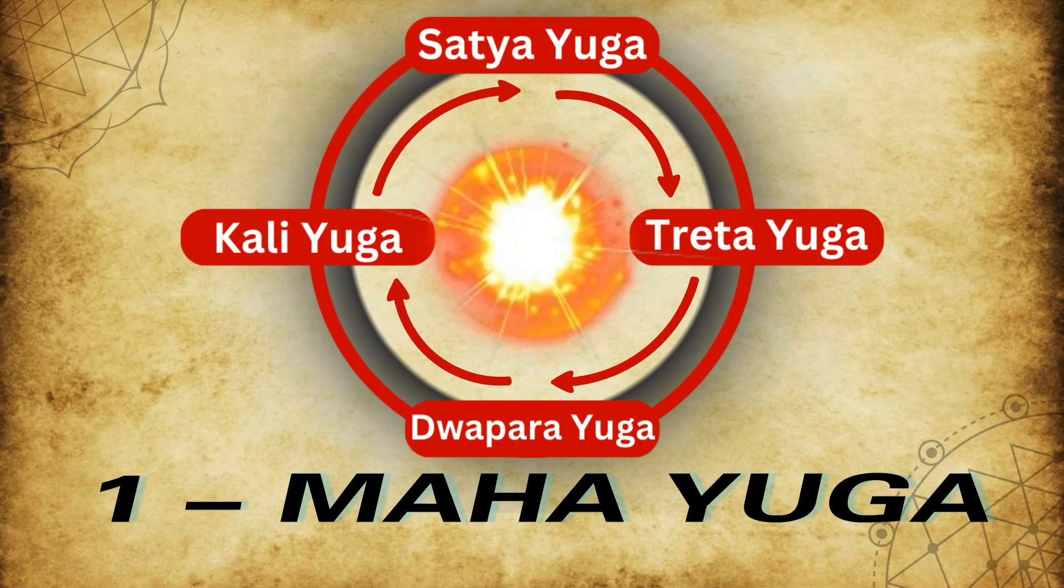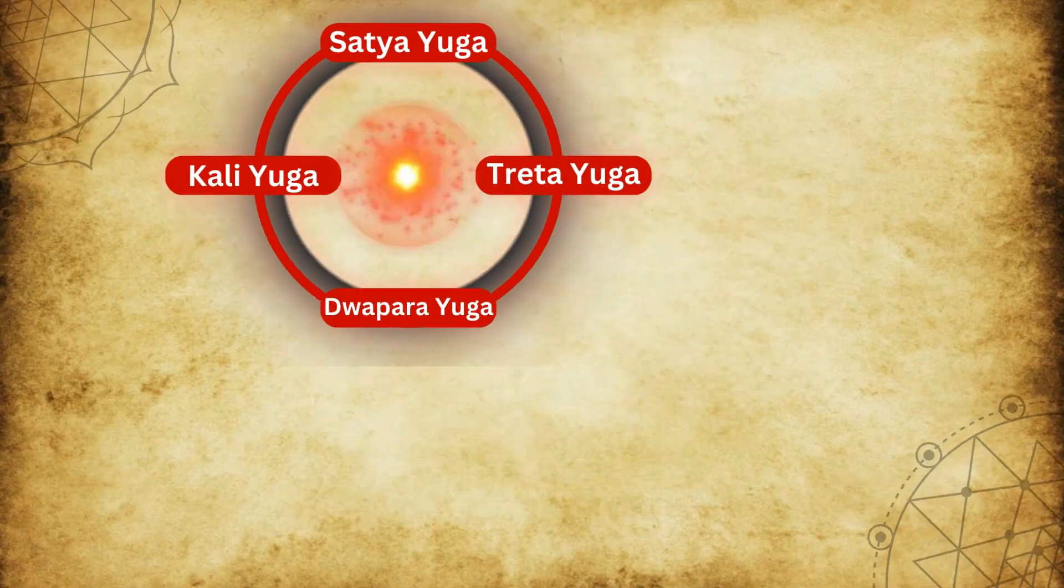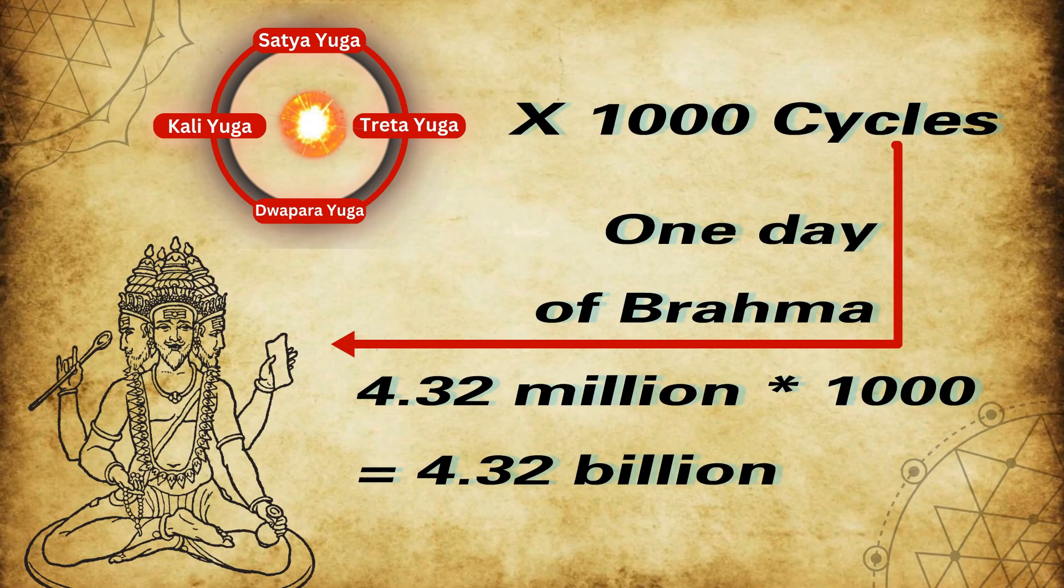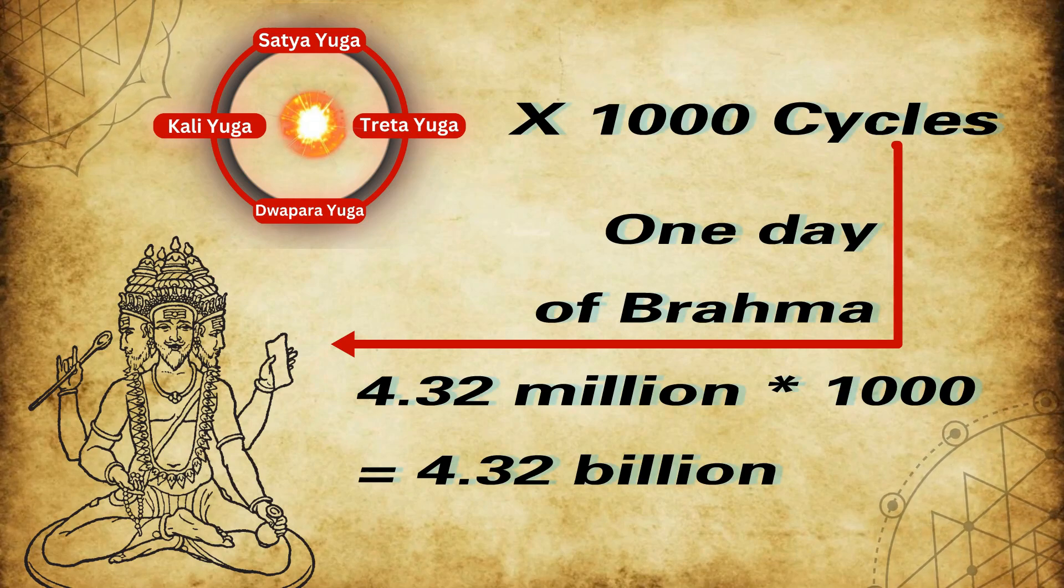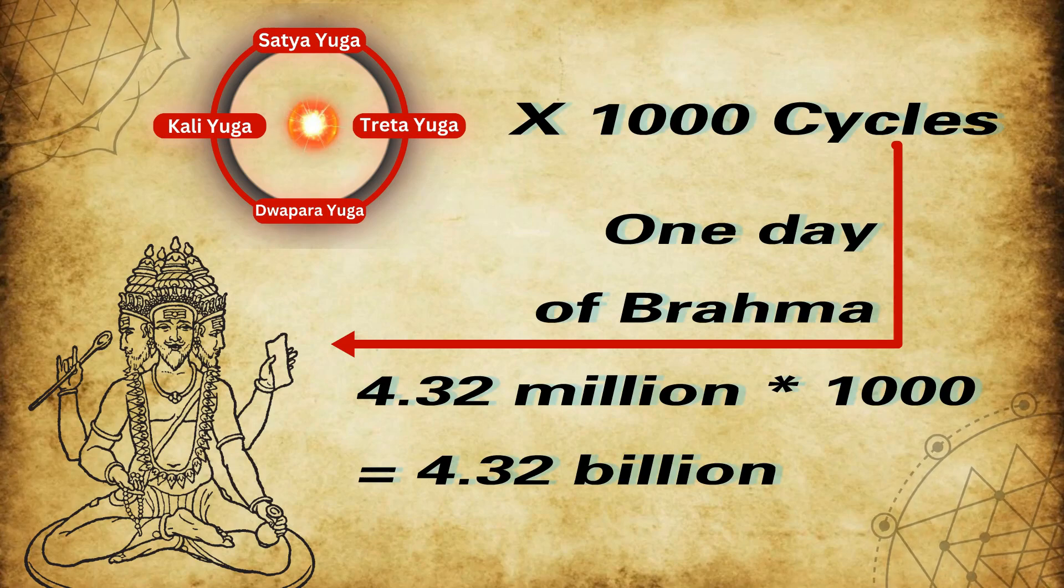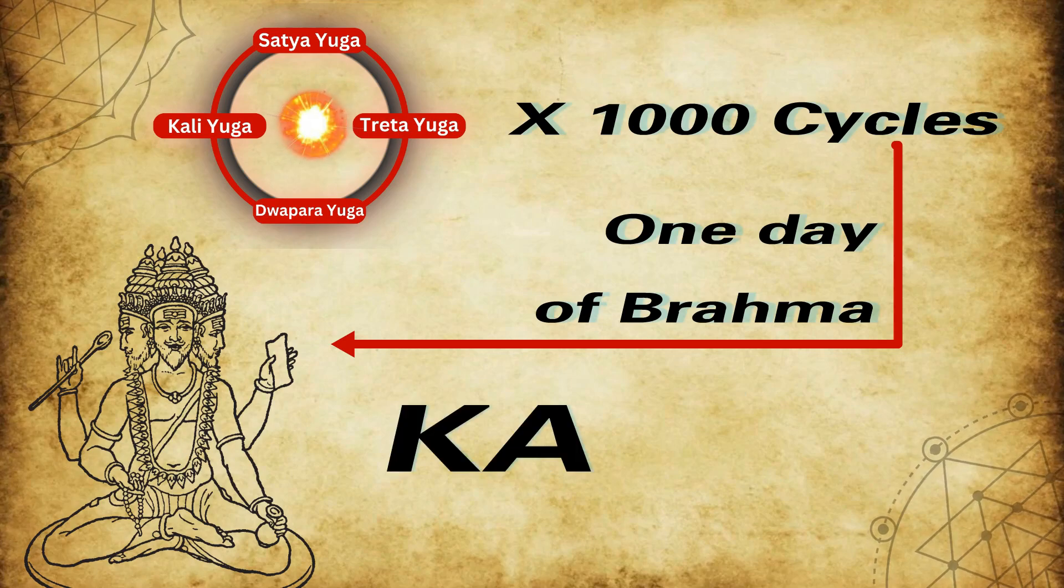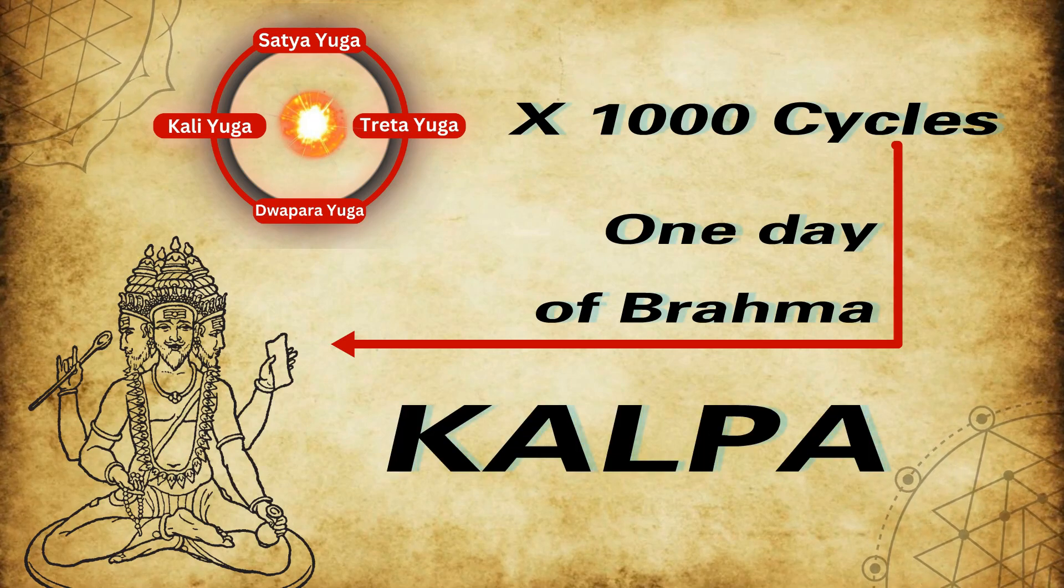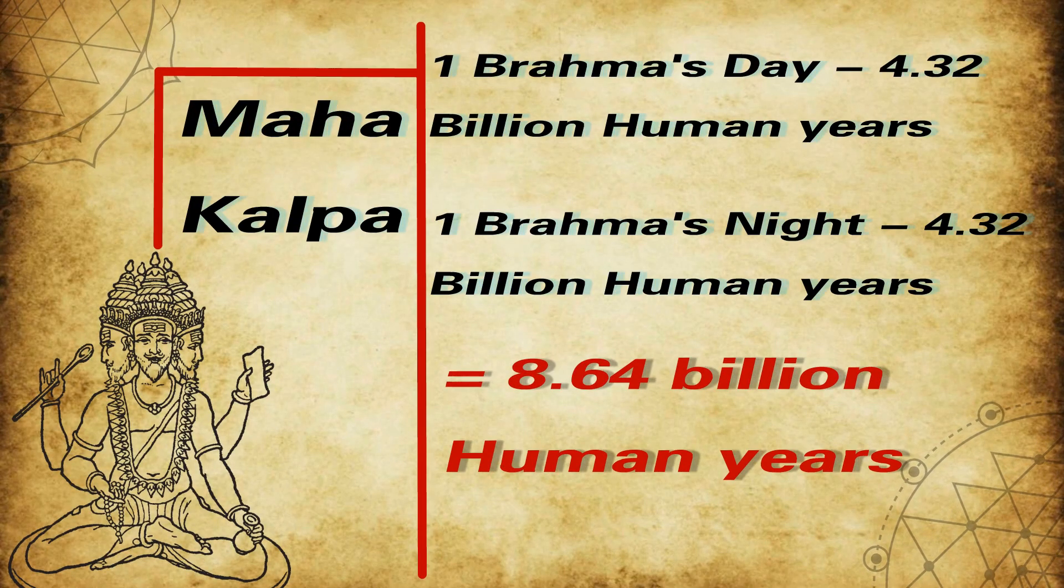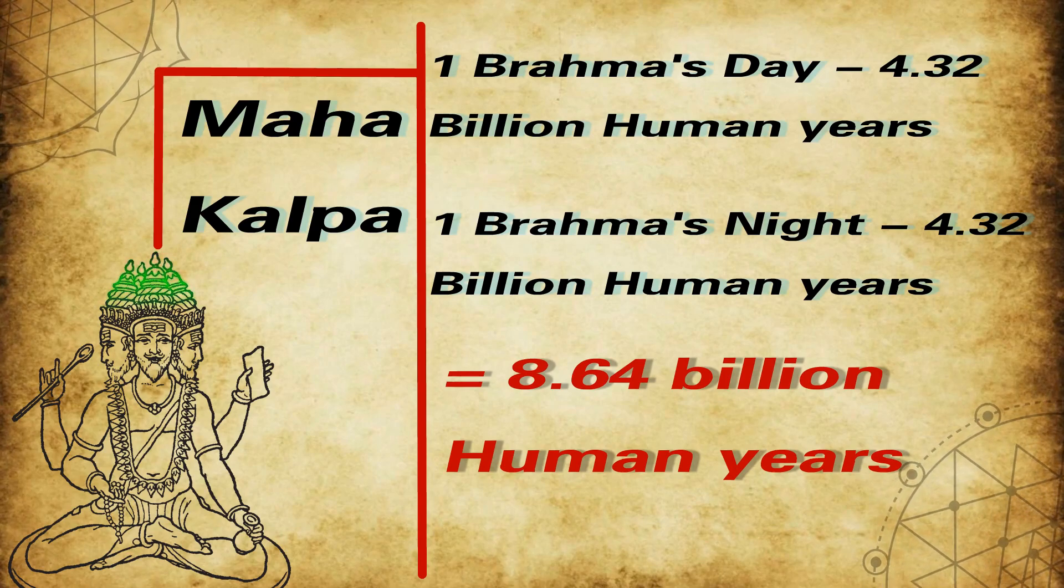This Yuga cycle that you are watching on screen right now is called Mahayuga. One thousand such cycles forms one day of Brahma. So one day of Brahma is 4.32 million multiplied by thousand, that is 4.32 billion human years. Each such day of Brahma is called a Kalpa. So one complete day and night has 8.64 billion human years.